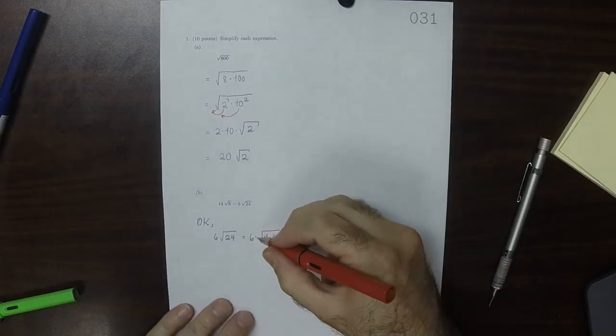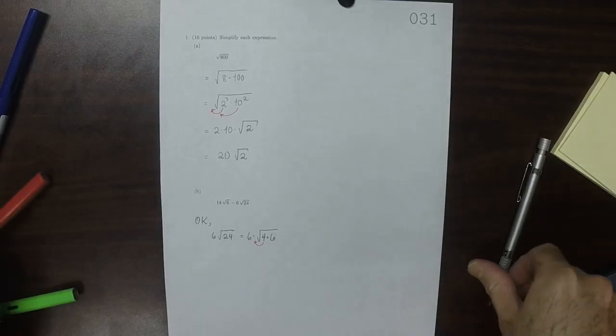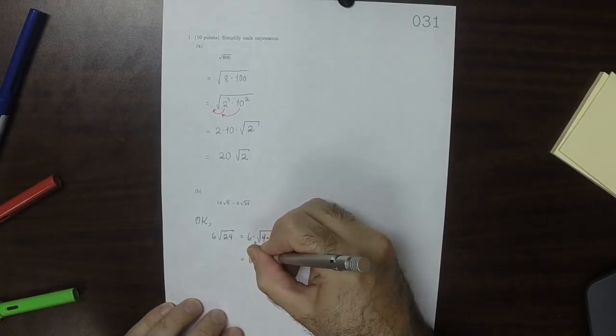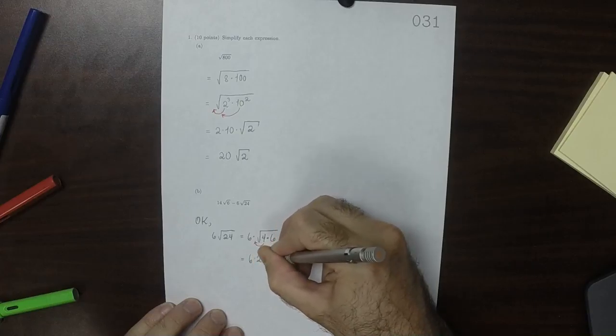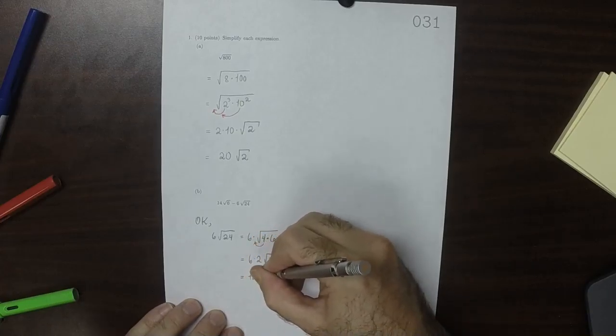And that 4 can come out of the square root as a 2. So that would be 6 multiplied by 2 square root 6, which is 12 square root 6.